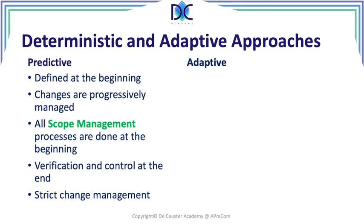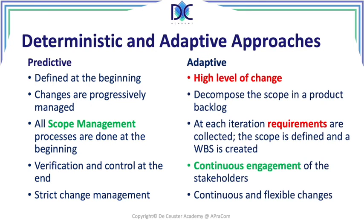Let's have a look at what it means in an adaptive environment. First of all, we look at a high level of change, and what we do with the scope is decompose it into a product backlog. A product backlog contains all the items that we intend to implement, but at each iteration requirements are collected again. We define the scope for the iteration and create a small WBS to understand how all the things are linked together. There is a continuous engagement of the stakeholders and we have continuous and flexible changes.